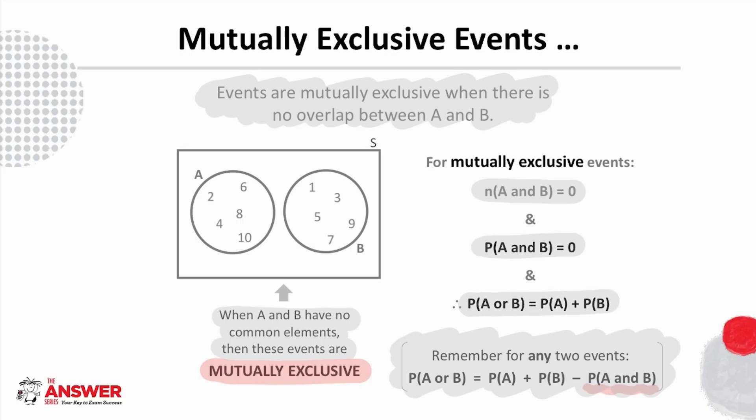And so if you need to prove events mutually exclusive, you can prove either this true or this true. Or if you are told events are mutually exclusive, then you can claim either of these two equations to be true.